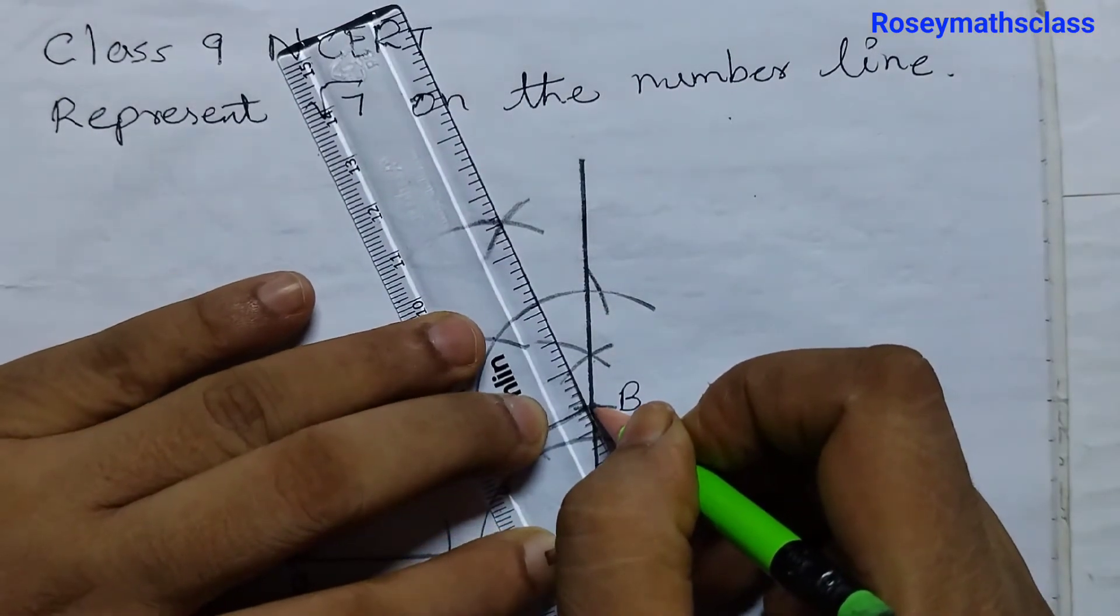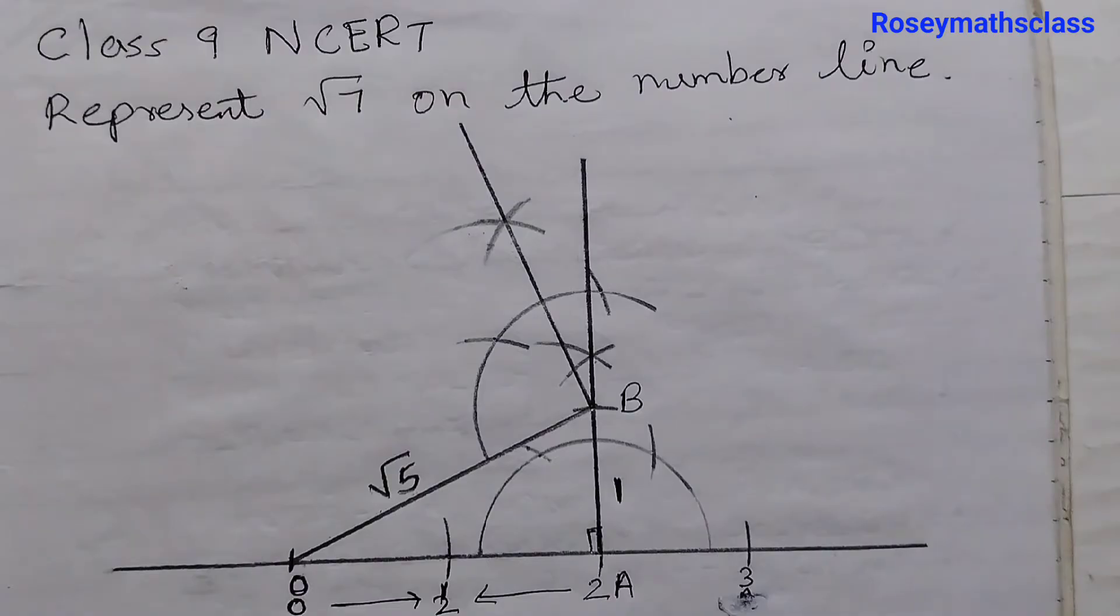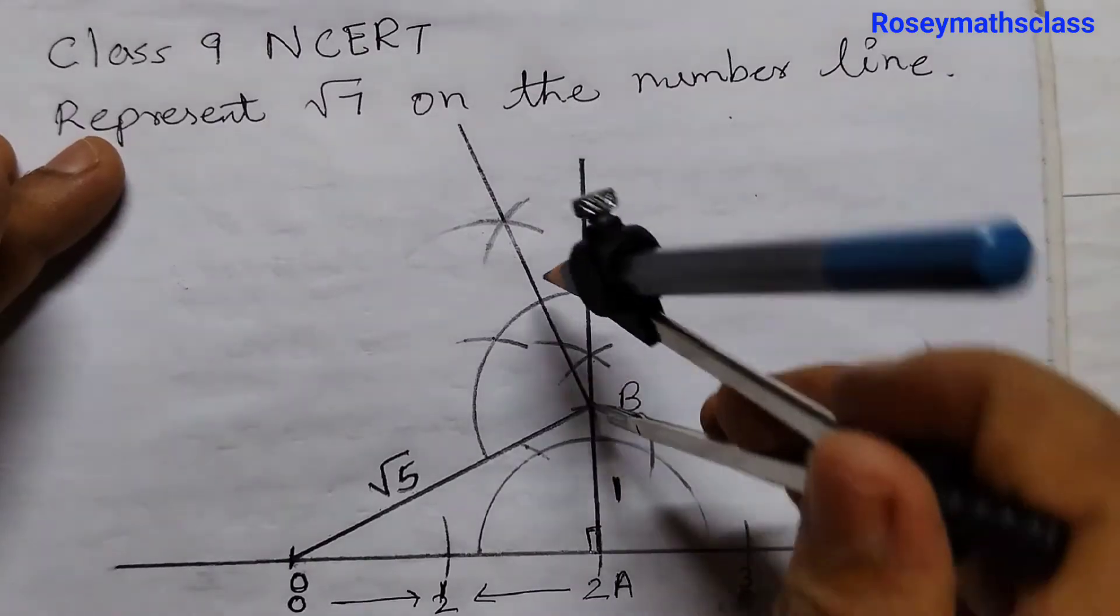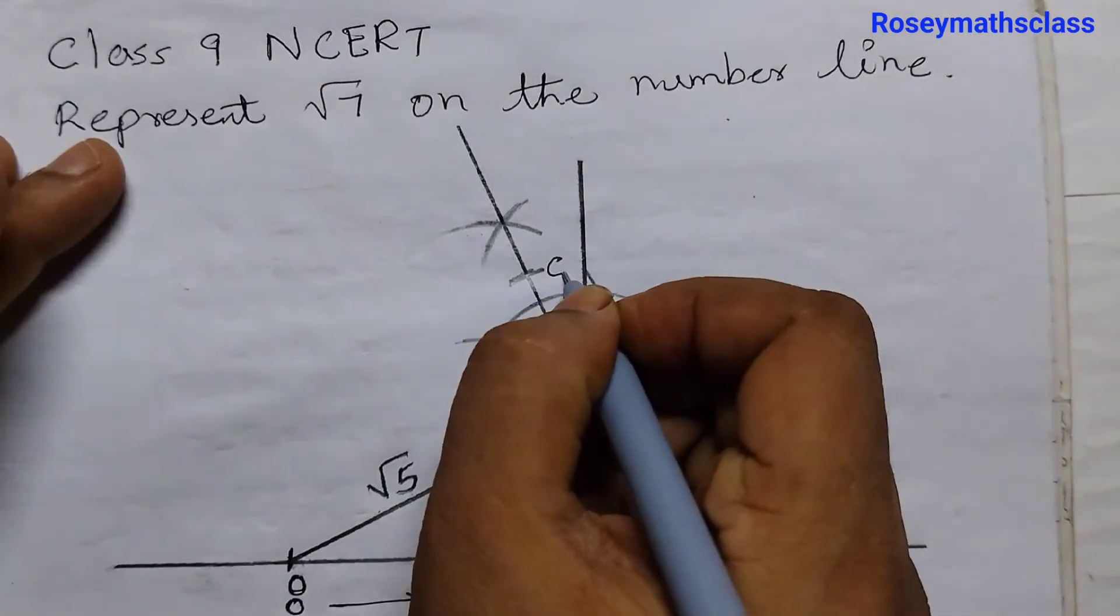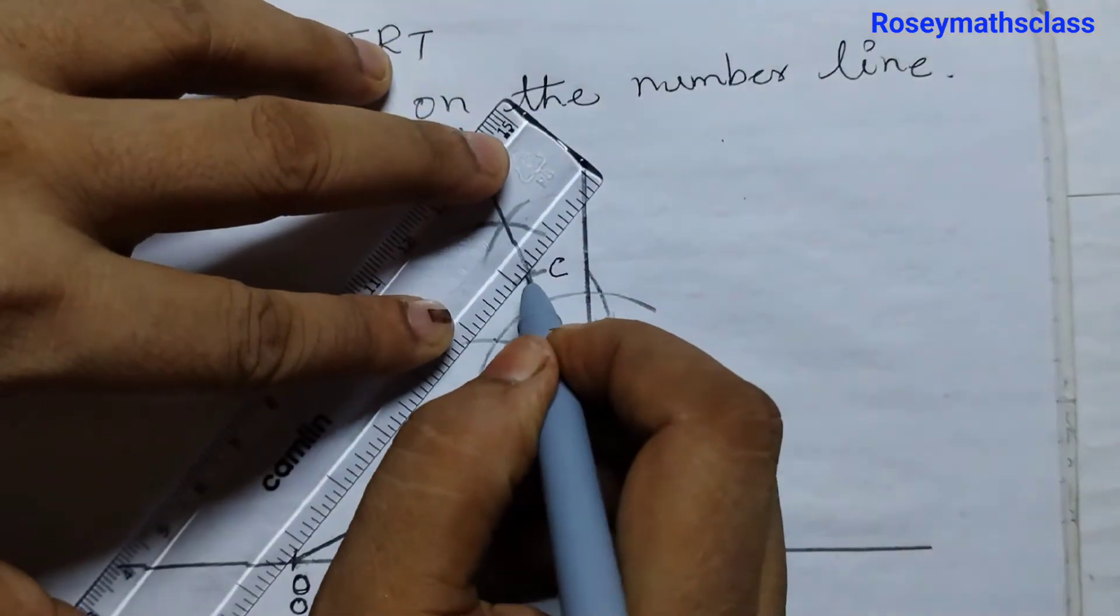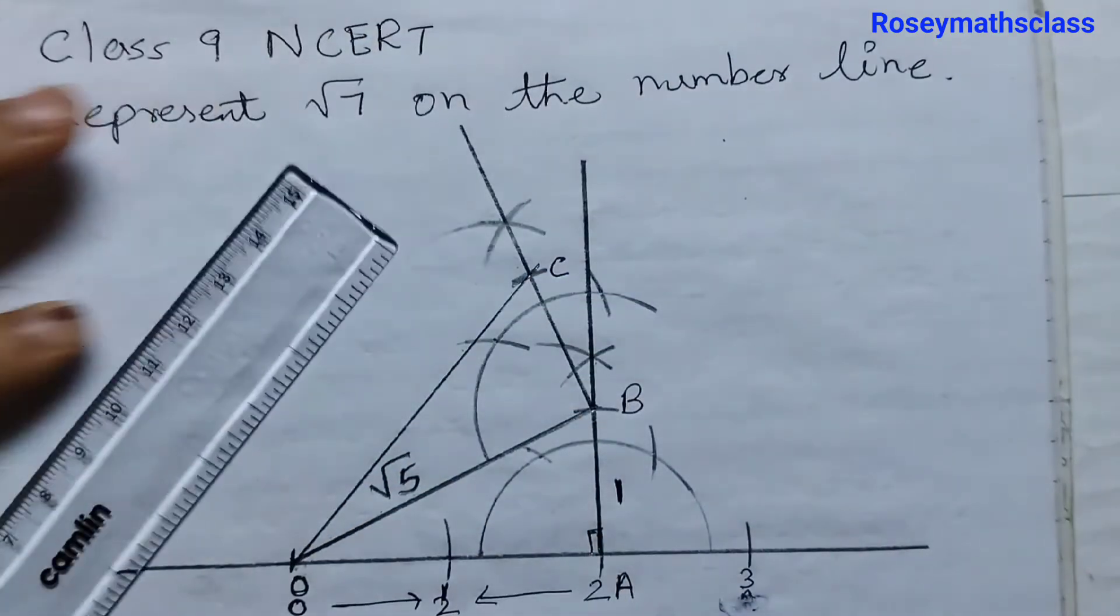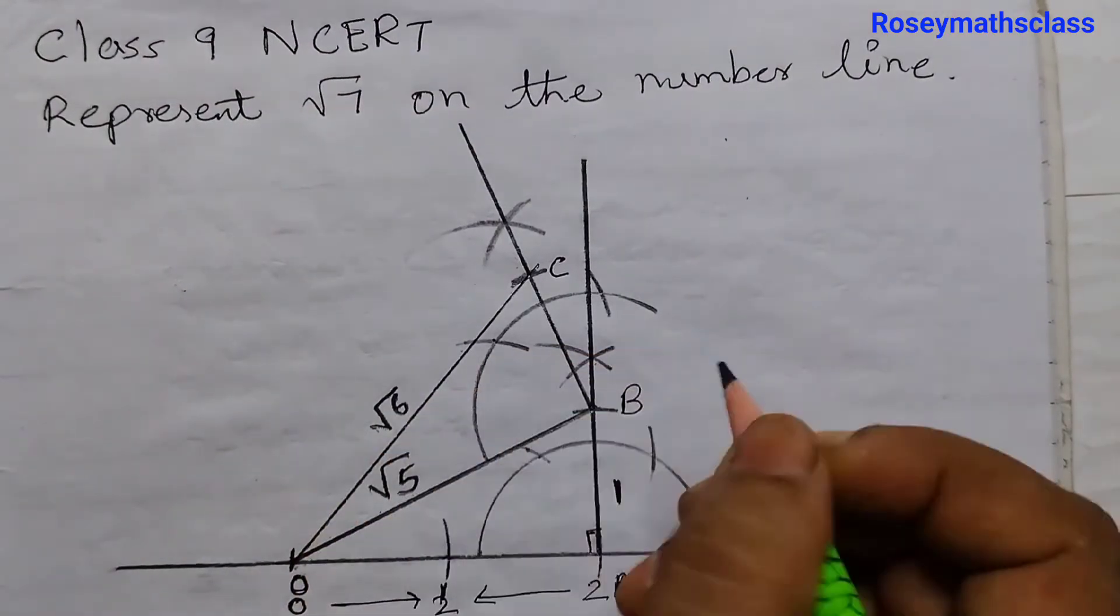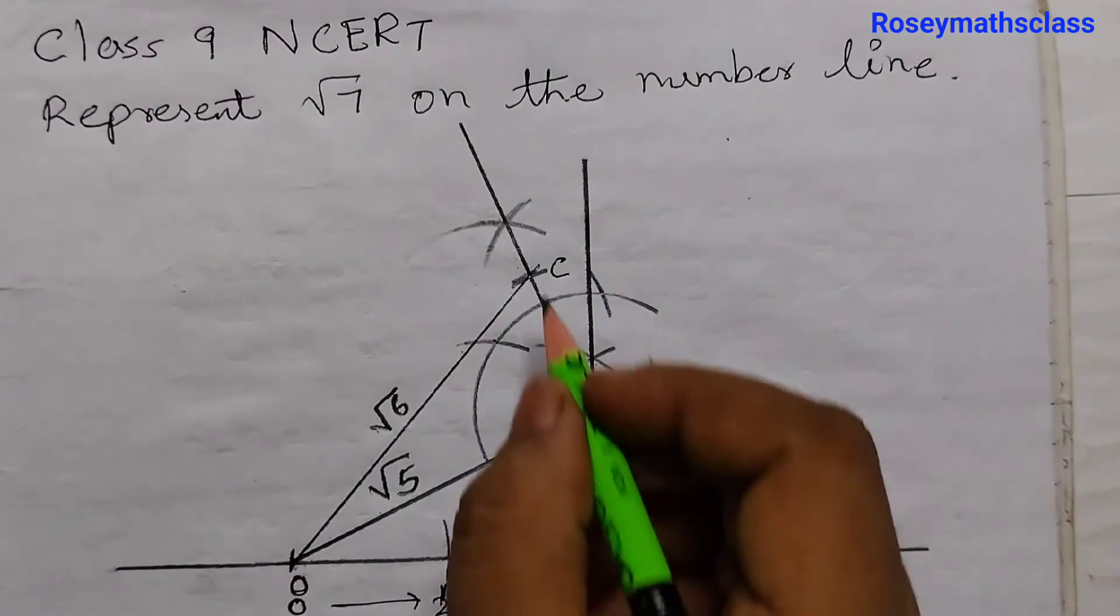Join B and this intersecting point. Again take one unit as the measurement and cut an arc from point B. Let's say this point is C. Join OC. OC represents square root of 6. Again we can prove this using Pythagorean theorem, taking the triangle O, B, C.